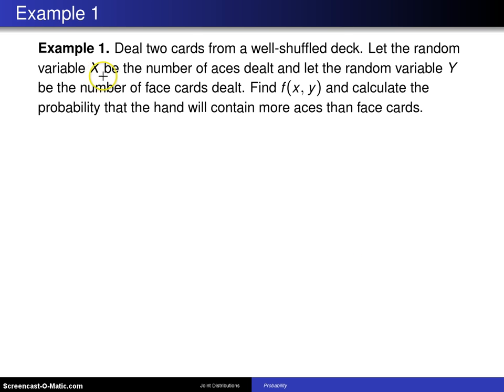First of all, you want to determine whether X and Y are discrete or continuous random variables. In this particular case, because it is the number of aces and the number of face cards, they are discrete random variables.